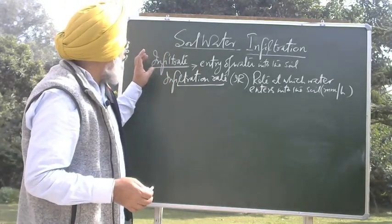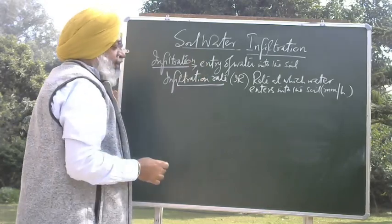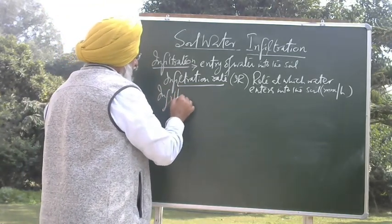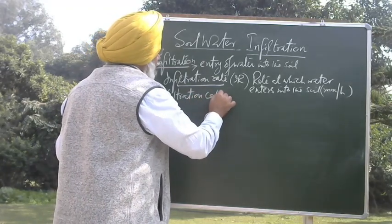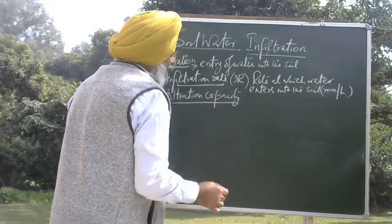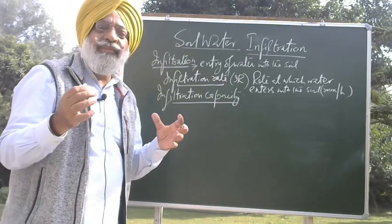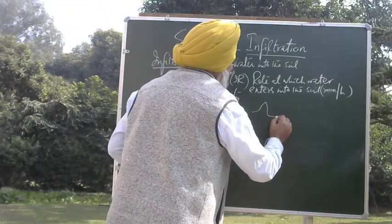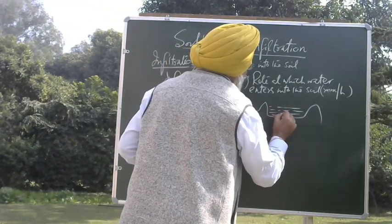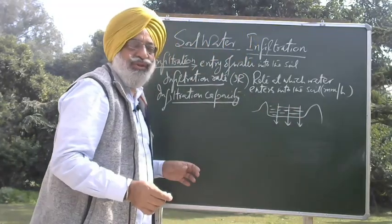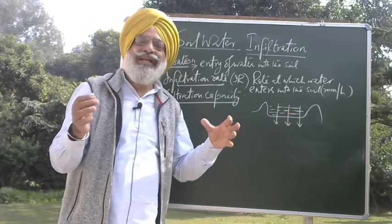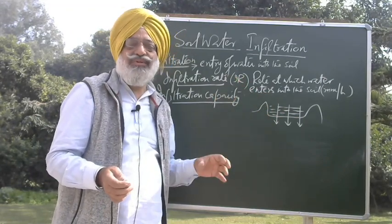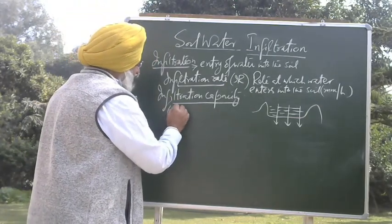Simply: infiltration, then infiltration rate, and there is one more term which is very commonly used — that is infiltration capacity. Infiltration capacity is the maximum rate at which water enters into the surface of the soil. For example, if you have a soil surface and water remains stagnant over it at atmospheric pressure, the maximum rate at which water enters into the soil is called infiltration capacity. We also call this as infiltrability.